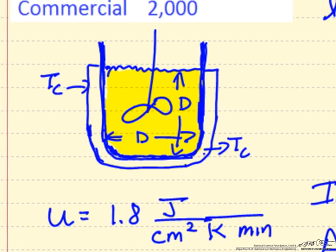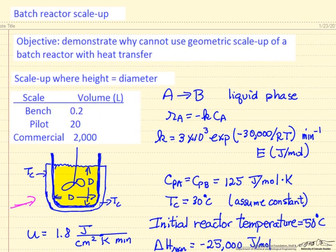In the drawing here, we're representing a batch reactor that has a cooling jacket around it, with diameter D and height D. We're going to look at scale from a small scale, 0.2 liters, then a factor 100 scale-up to 20 liters, and then another factor 100 to 2,000 liters. These are just picked for convenience and not to suggest this is exactly how we'd want to do scale-up.